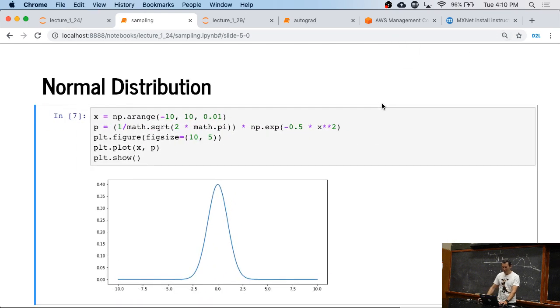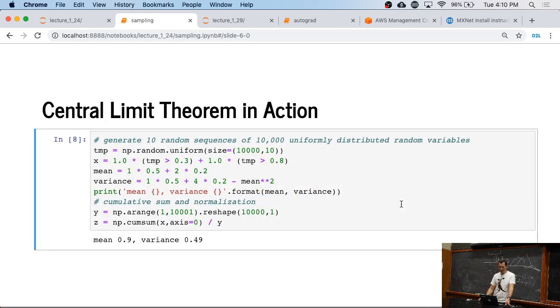Now, last but not least, the normal distribution. And this is how you plot one. This is just creating a range between minus 10 and 10, grid spacing 0.01. Then you evaluate this function here. You plot it. And that's it. Nothing particularly special. Except that now, what we're going to do is, we're going to actually try out what our central limit theorem does.